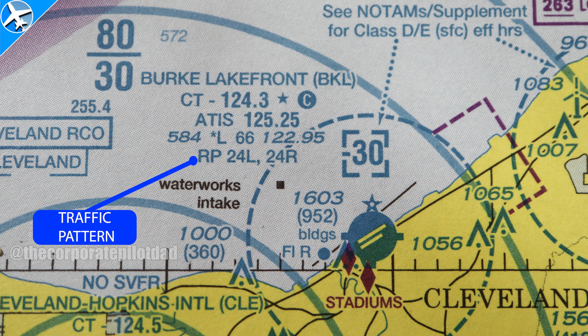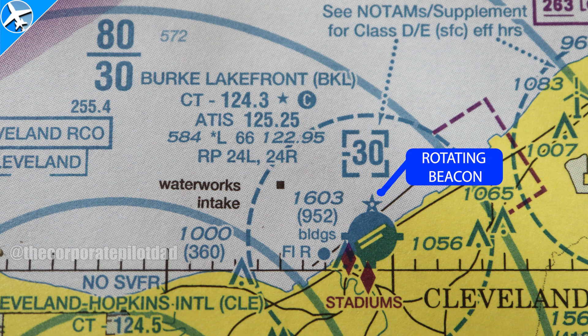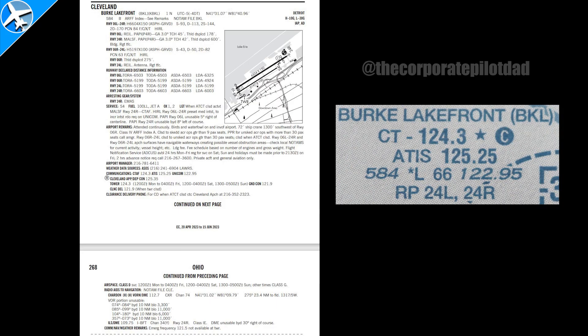The last piece of information tells us about traffic pattern runways. Runways 24 Left and 24 Right both use a right-hand pattern. These traffic patterns are to the right to keep aircraft away from downtown Cleveland. This airport also has a rotating beacon in operation from sunset to sunrise — comment below if you know the other times when a rotating beacon would be on during the daytime.